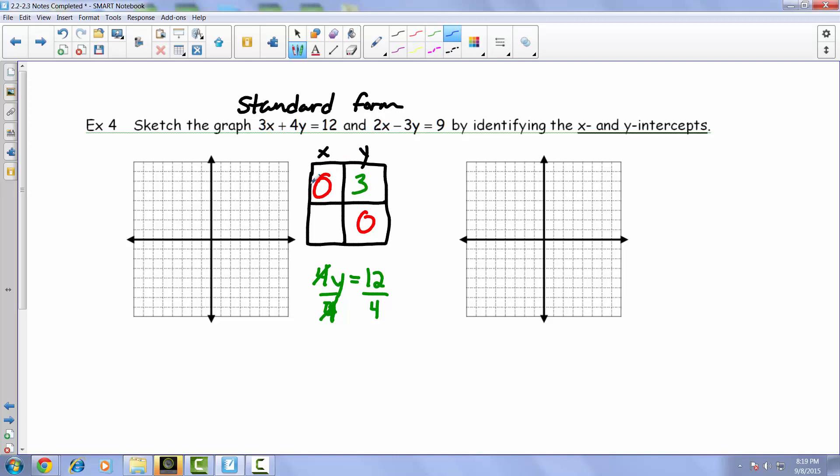Now from that, that actually creates the point 0, 3. In other words, when you graph that, here is 0, 3. We can see that it is in fact crossing that y-axis. In other words, this is that y-intercept, 0, 3.